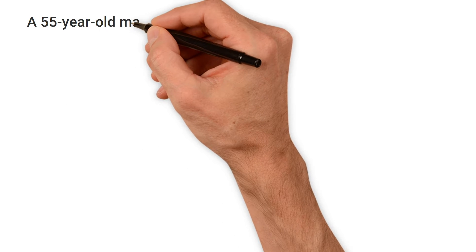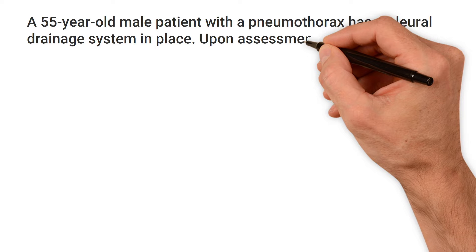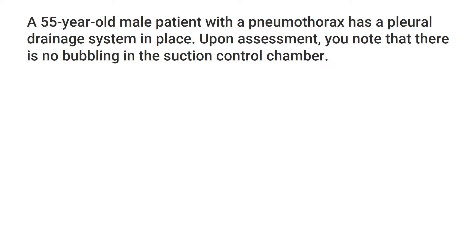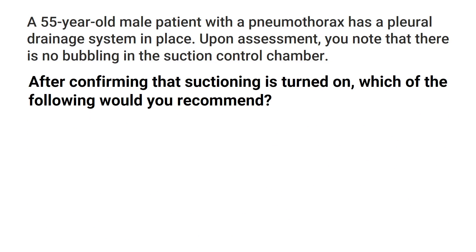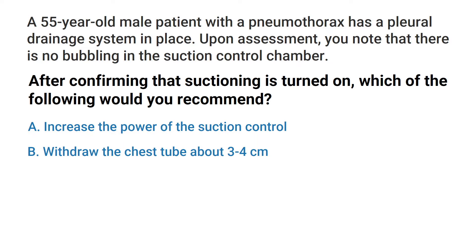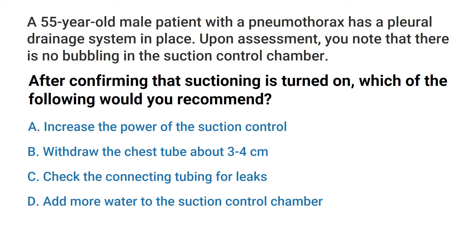A 55-year-old male patient with a pneumothorax has a pleural drainage system in place. Upon assessment you note that there is no bubbling in the suction control chamber. After confirming that suctioning is turned on, which of the following would you recommend? A) Increase the power of the suction control. B) Withdraw the chest tube about three or four centimeters. C) Check the connecting tubing for leaks. Or D) Add more water to the suction control chamber.